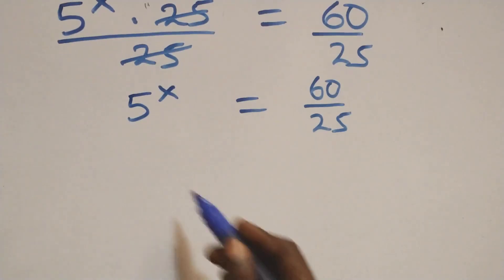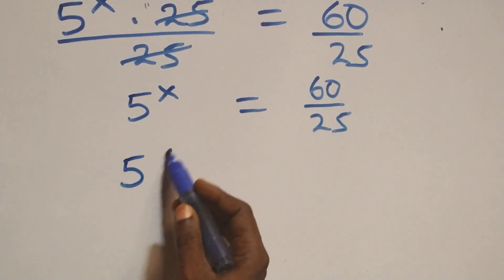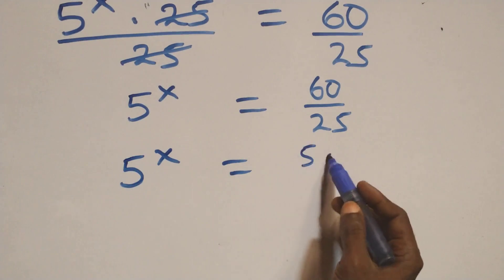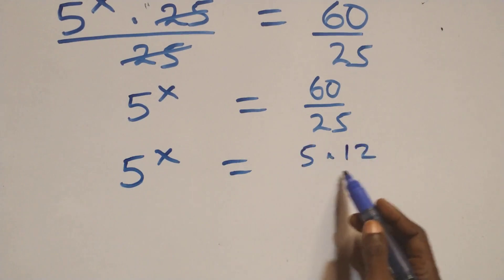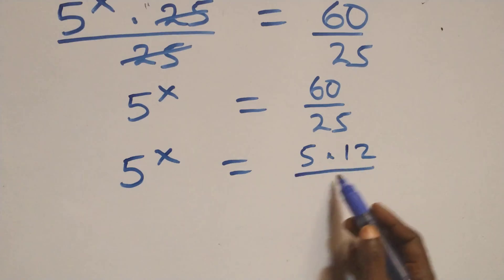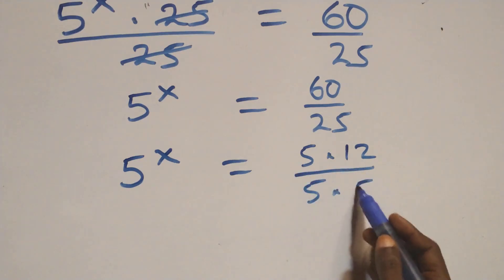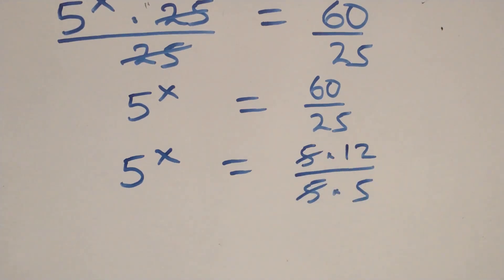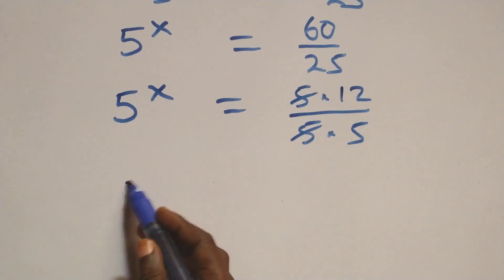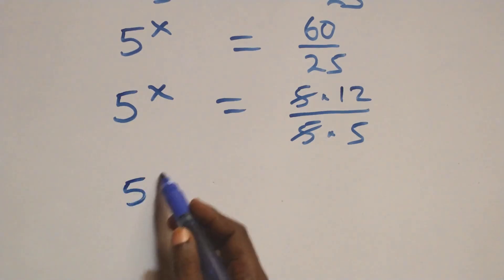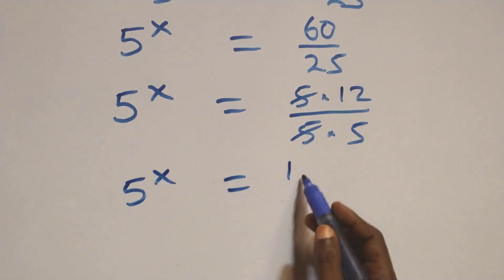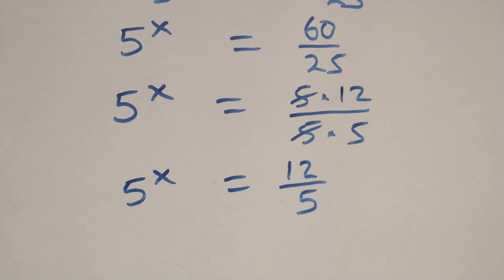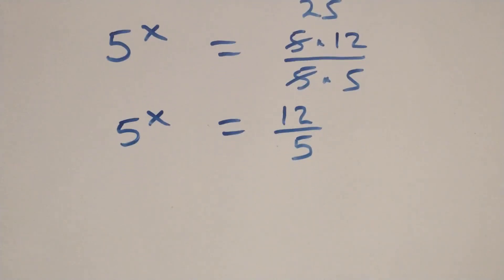We can write 60 over 25 as 5 times 12 over 5 times 5. The 5s cancel each other, giving us 5 raised to power x equals 12 over 5.